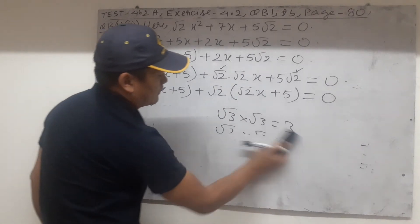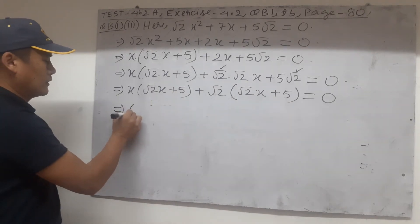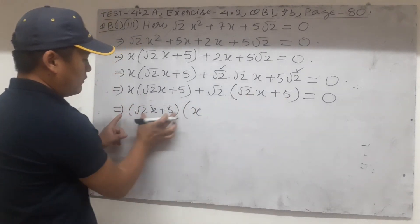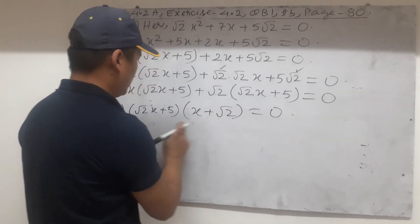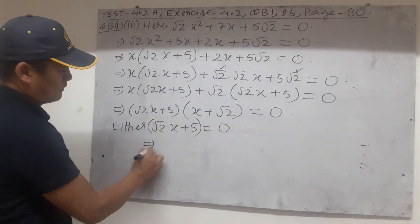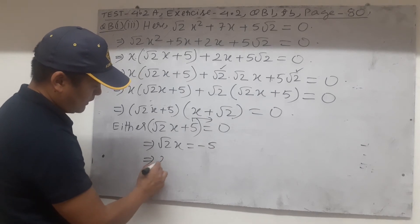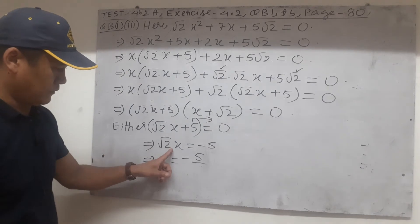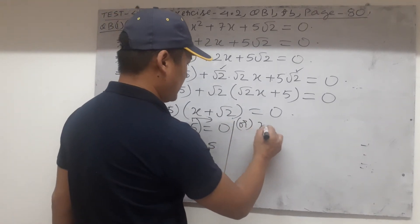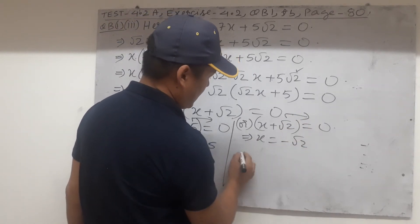Taking the two terms and finding the common factor root 2x plus 5 appears in both terms. So take root 2x plus 5 outside the bracket: inside the new bracket will be x plus root 2. Therefore (root 2x plus 5)(x plus root 2) equals 0. Setting each factor to zero: root 2x plus 5 equals 0 gives x equals minus 5 by root 2, and x plus root 2 equals 0 gives x equals minus root 2.